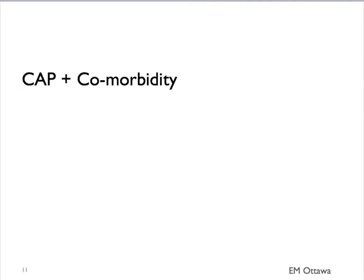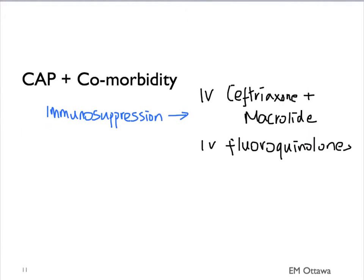What about the community-acquired pneumonia patient with a comorbidity? If their comorbidity is general immunosuppression, then the IV antibiotics we just talked about — fluoroquinolones or ceftriaxone plus macrolides — would be good choices. In patients with COPD, the same regimen would also work.